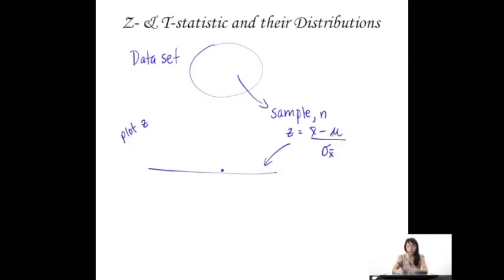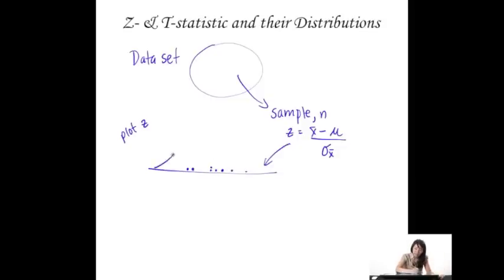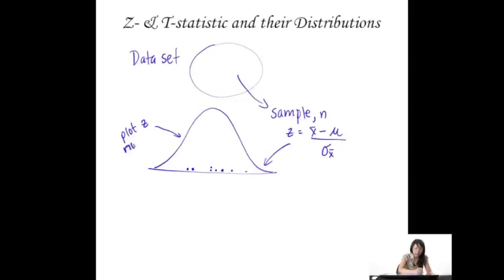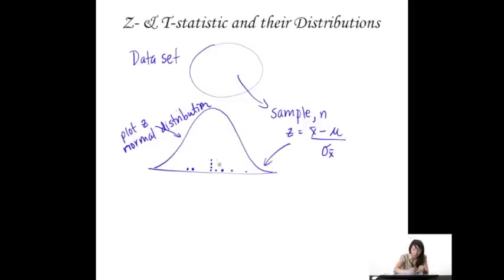Then you plot that Z value, replace the sample, draw another sample, and do this again. If you do that over and over again, many many times, what you end up getting is a normal distribution. So many times if you plot Z, you get a normal distribution — and because of that, we also call this a Z distribution, because it's a distribution made up of a whole bunch of Zs, and it has the shape of a normal distribution.